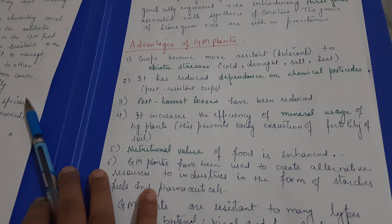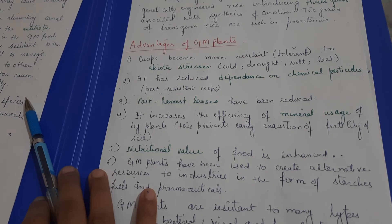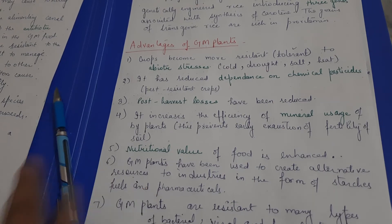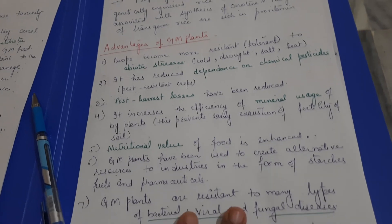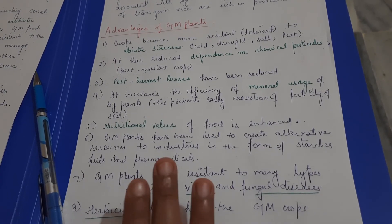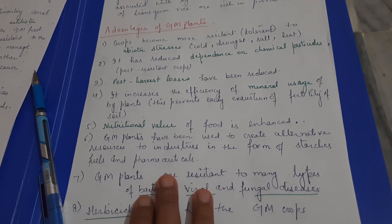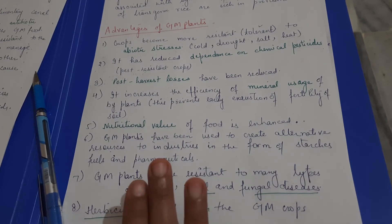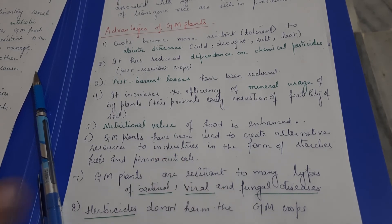GM crops can also have enhanced nutritional value — the example of Golden Rice shows how GM plants can be enriched with specific nutrients compared to normal crops. Additionally, GM crops can serve as alternative industrial sources, providing starch, fuels, and pharmaceuticals.